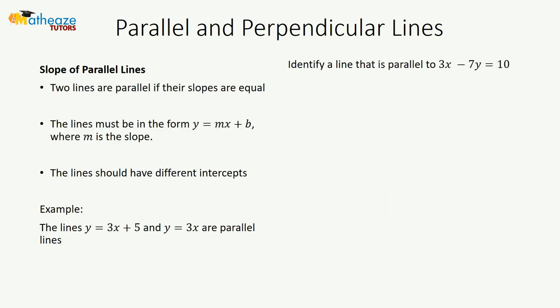The slope of parallel lines are always equal. Two lines are parallel if their slopes are the same. To identify those slopes, you must write the equations in the form y = mx + b, where m is the slope. We also need to make sure they have different intercepts, because if they have the same slope and the same intercept they represent the same line. For example, y = 3x + 5 and y = 3x are parallel because the slope for both is 3 — the coefficient of x — and they have different intercepts.